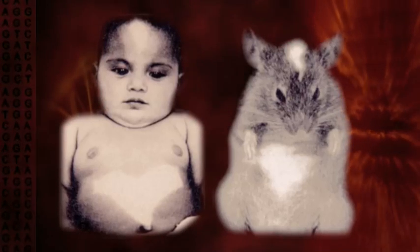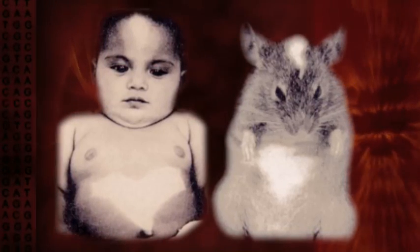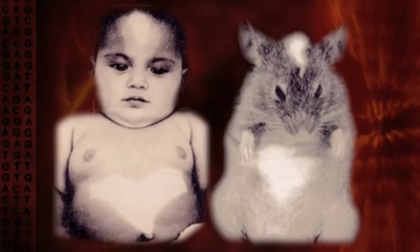For example, this infant and this mouse have a mutation in the same gene, which results in a similar white patch on the stomach and forehead.